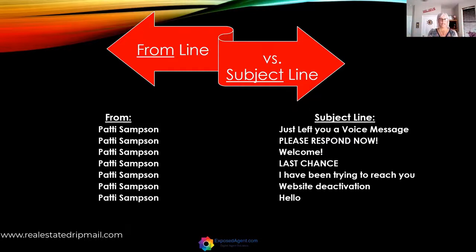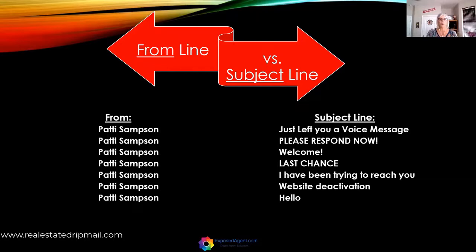I want you to look at this. If you got an email from somebody you didn't know — you signed up online for something, you didn't know them from Adam, you were trying to get something free — and you got an email that says 'Patty Sampson' in the subject line. This is literally stuff I've seen taken right out of what people send in our business. Would you open that email? What on this screen looks like a real estate agent? Nothing.